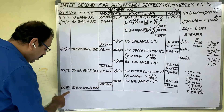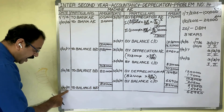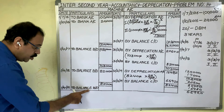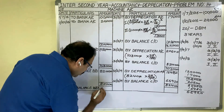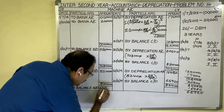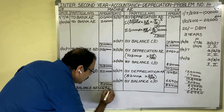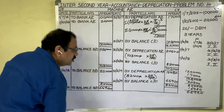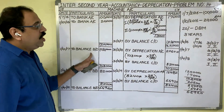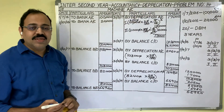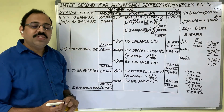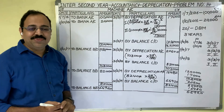For three years the problem is asked, but since there is still a balance carried down, bring the balance to the next year. The next immediate date is 1st April 2019, To Balance Brought Down — 65,920. This is all about problem 14 from the depreciation lesson. I hope this video is useful to you. Thank you.